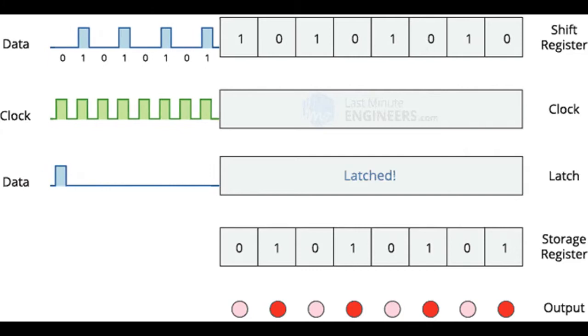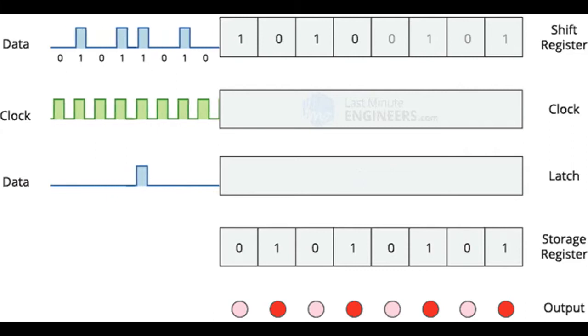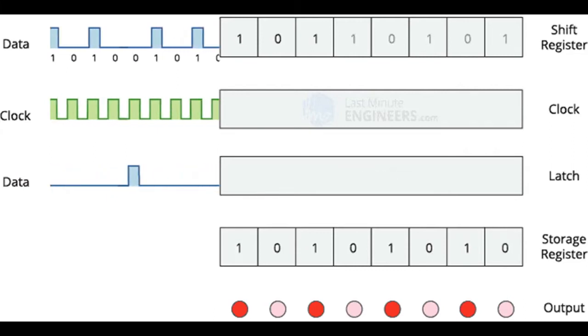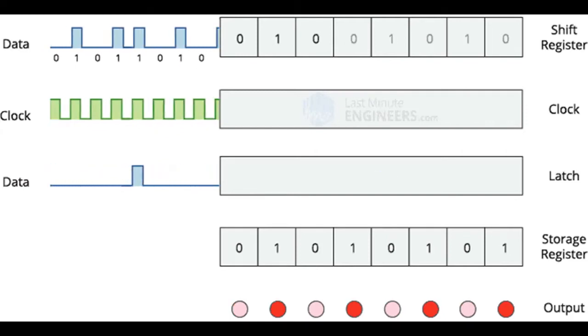When all your bits are sent, you turn on the latch signal and that copies the bits from the shift register to the latch register, and from there they can now be read.